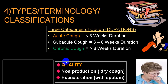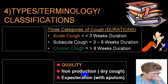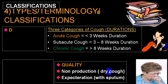Depending upon the production of sputum, cough is called non-productive or with expectoration. If it is with sputum, we call it productive, and if there is no production of sputum, we call it a dry cough.